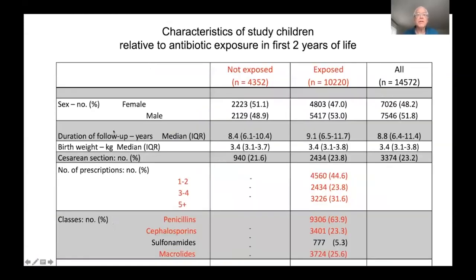Here are the characteristics of study children relative to antibiotic exposure in the first two years of life. Of the 14,000 kids, there were 10,000 who received antibiotics in the first two years of life and about 4,000 who didn't. The study is split evenly between boys and girls. The number of prescriptions ranged from one to two, three to four, or five or more courses. The three major classes of antibiotics were penicillins, cephalosporins, and macrolides.